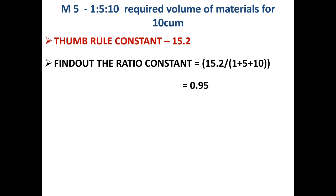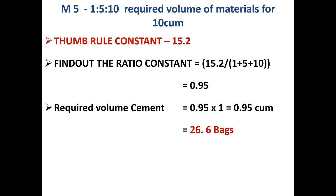Now find the required cement for M5 grade concrete for 10 cubic meters. Required volume of cement = ratio constant × cement ratio = 0.95 × 1 = 0.95 cubic meters. Converting this to bags, you get 26.6 bags. So for M5 grade of concrete, 26.6 bags of cement are required for 10 cubic meters.